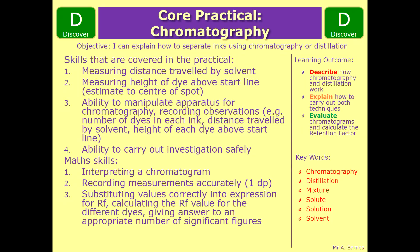In terms of the maths, you should be able to interpret the chromatogram — tell me how many spots there are, how far they've travelled, and so on. You need to record your measurements accurately to one decimal place, so if you use a ruler don't say it's gone five centimetres if it's actually 5.3 — be specific. Then substitute those values into the expression for retention factor and be able to calculate it. If you're not sure on any of those skills, go back to the previous videos.